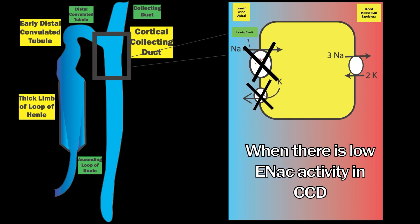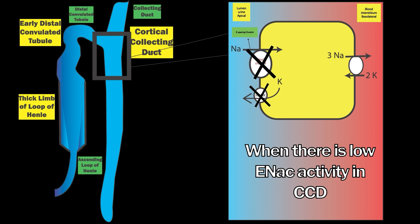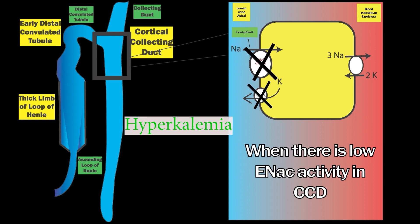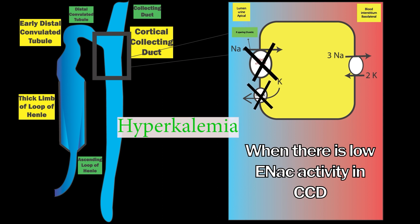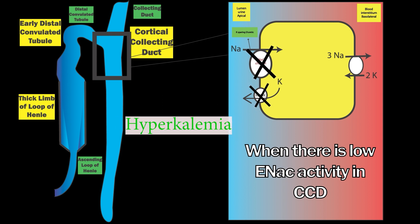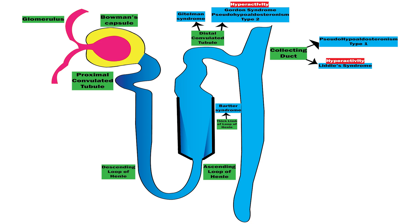Similarly, when there is low ENaC activity in the cortical collecting duct by itself, ENaC will not absorb sodium and ROMK will not excrete potassium. As more sodium is lost in urine, there is hyponatremia, and with no excretion of potassium by ROMK, we have hyperkalemia in the blood.